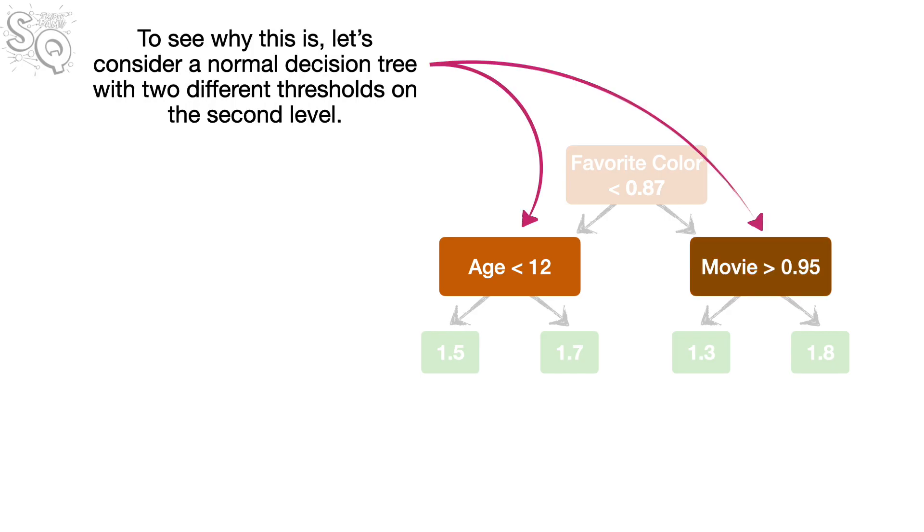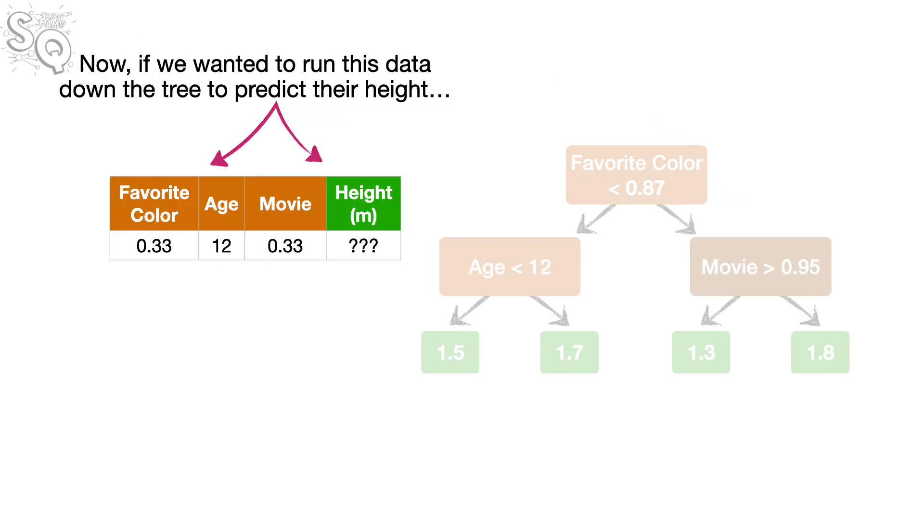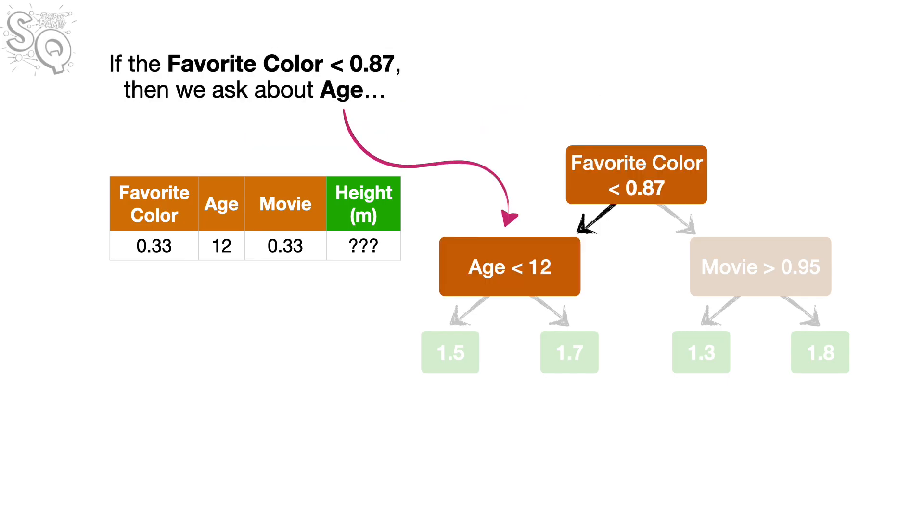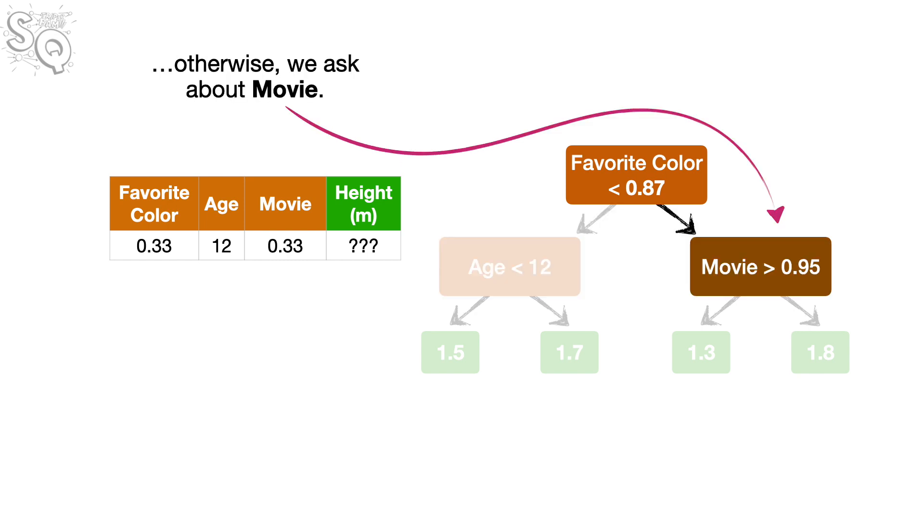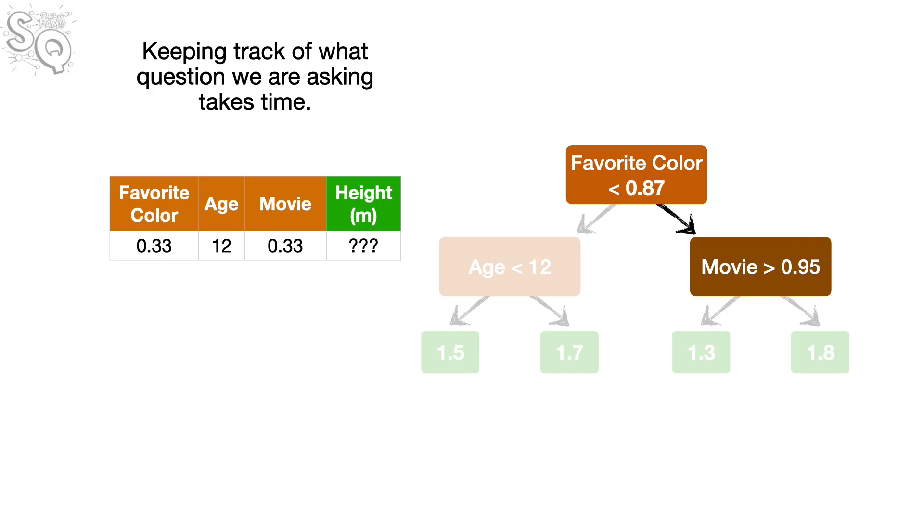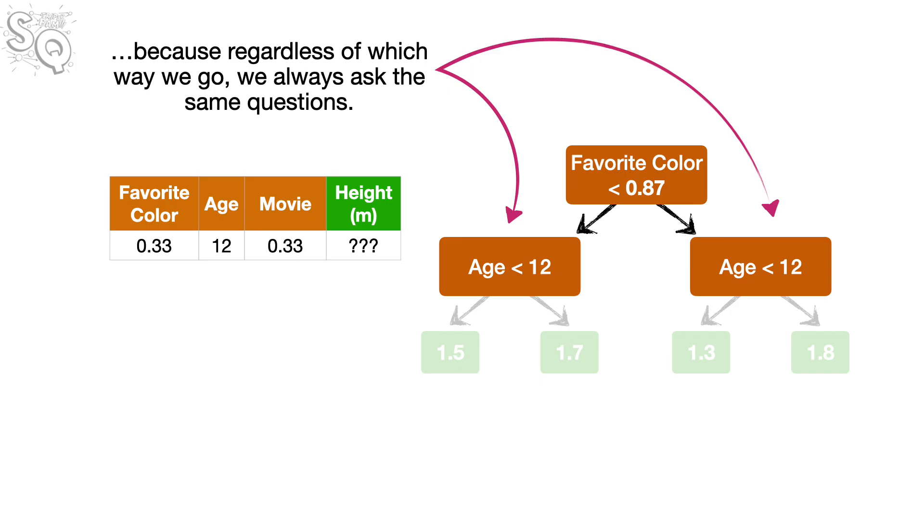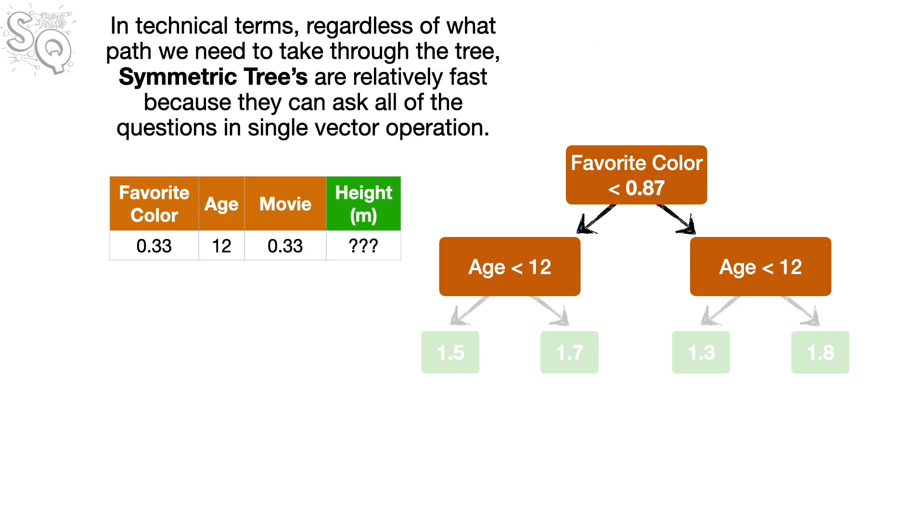The second reason is because symmetric decision trees can make predictions faster than normal trees. To see why this is, let's consider a normal decision tree with two different thresholds on the second level. Now, if we wanted to run this data down the tree to predict their height, then we would start by seeing if favorite color is less than 0.87. And if favorite color is less than 0.87, then we would ask about age. Otherwise, we ask about movie. Keeping track of what question we are asking takes time. In contrast, when each level asks the exact same questions, we don't have to keep track of which ones to ask. Because regardless of which way we go, we always ask the same questions. In technical terms, regardless of what path we need to take through the tree, symmetric trees are relatively fast because they can ask all of the questions in a single vector operation. Bam.